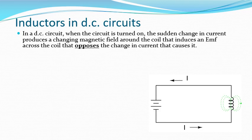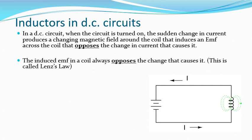That EMF opposes the changing current — that's why we call it a back EMF. This is Lenz's law, which states that the induced EMF in a coil will always oppose the change that causes it. So if the current is increasing, there'll be a back EMF opposing that increase. If we open the switch and the current decreases, there'll be a back EMF opposing that decrease. It always opposes the change — that's why it's called a back EMF.